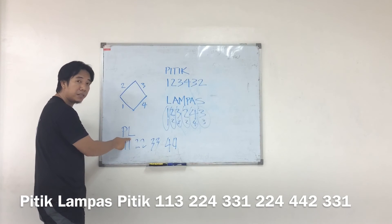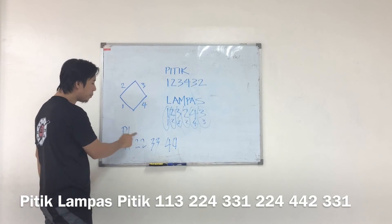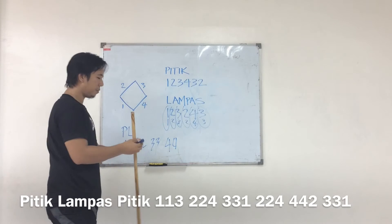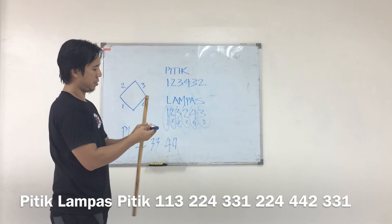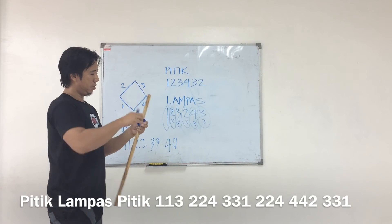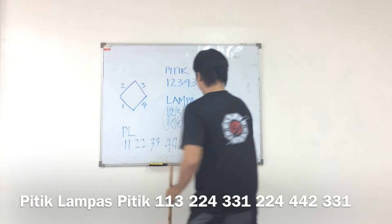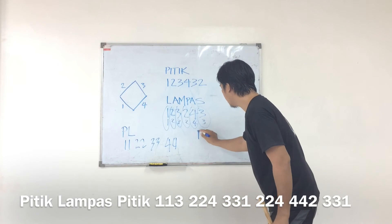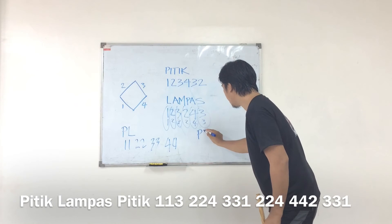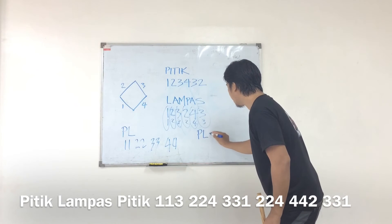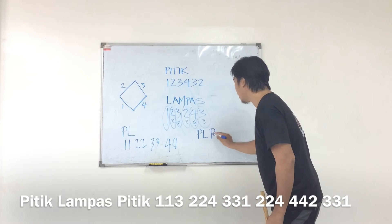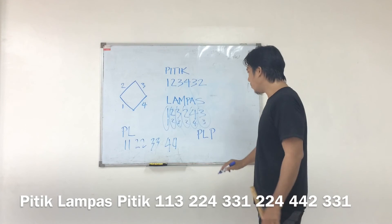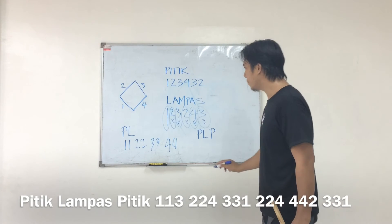The next level would be three strikes — it can be pitik, lampas, and then another pitik. Let me show that to you. This is pitik lampas and then pitik — so how are we going to do that?